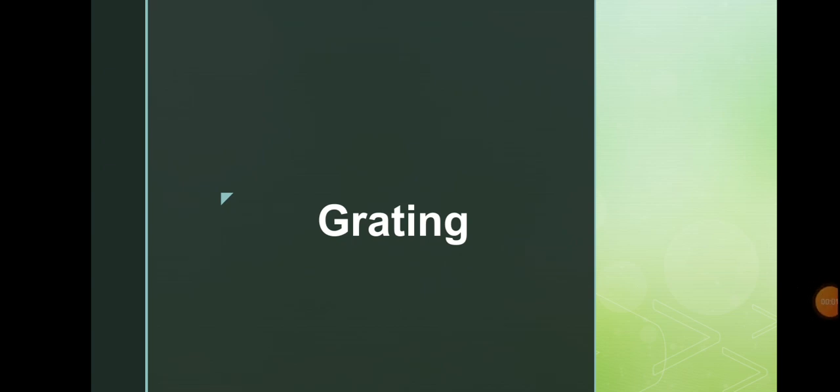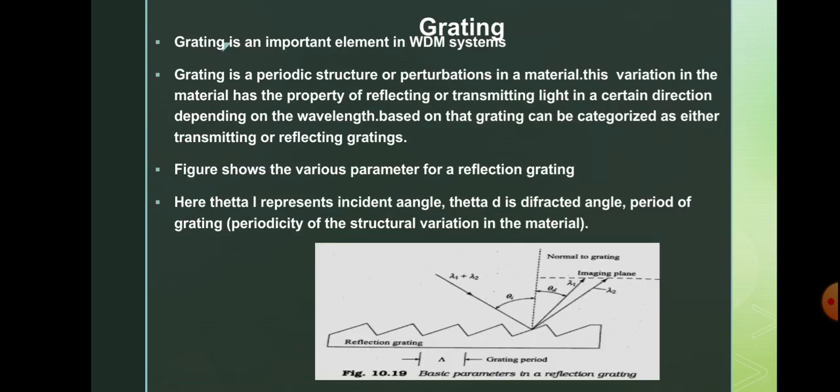Dear students, in this session we are going to discuss about grating. What do you mean by grating? Grating is an important element in the case of wavelength division multiplexing system. Grating is a periodic structure of perturbations in a material, and these variations in the material have the property of reflecting or transmitting the light in a certain direction, depending upon the wavelength.